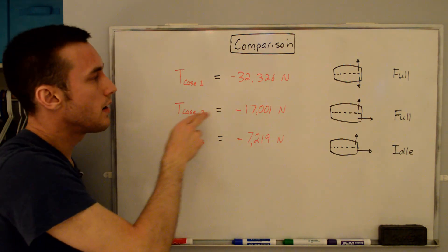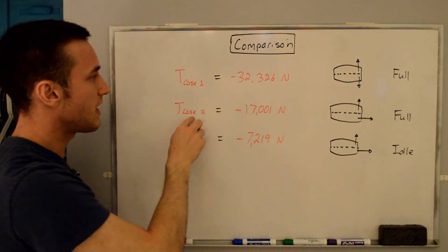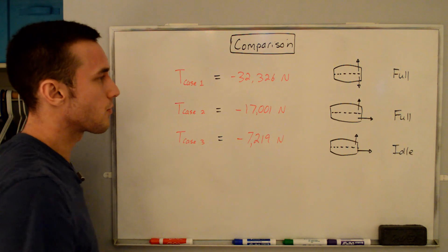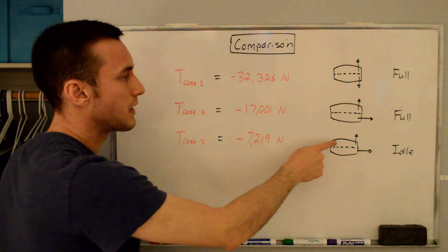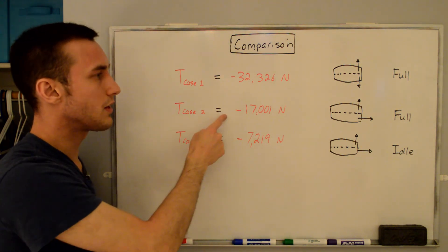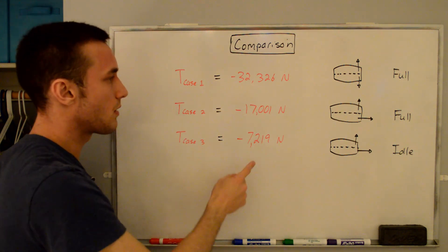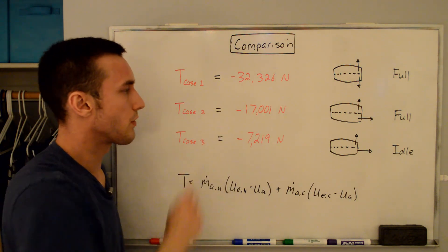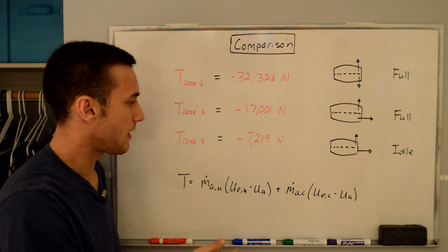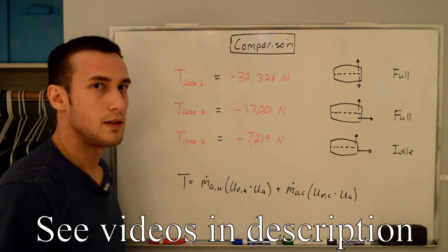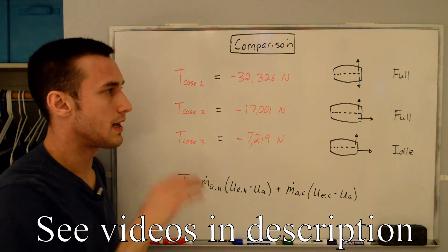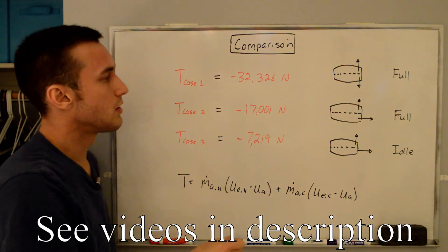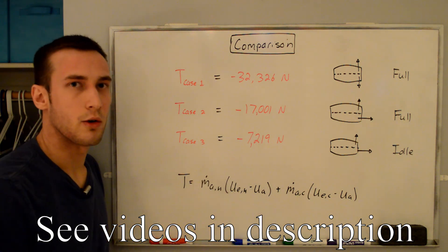Here's the final comparison: case one had the highest reverse thrust, case two was next, and case three had the least. Cases two and three are particularly interesting — both have deflected bypass flow, but case two uses full thrust with maximum mass flow rate and case three uses idle thrust with minimum mass flow rate. In both, the bypass thrust was negative enough to offset the core's positive thrust. This is why when a pilot lands and engages thrust reversers, they spool up the engines to get maximum mass flow and maximum reverse thrust.